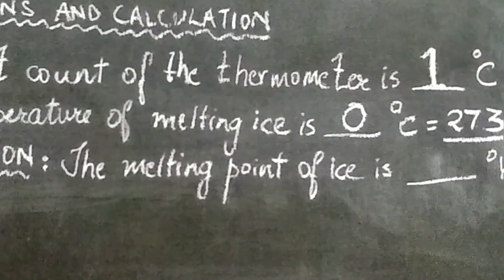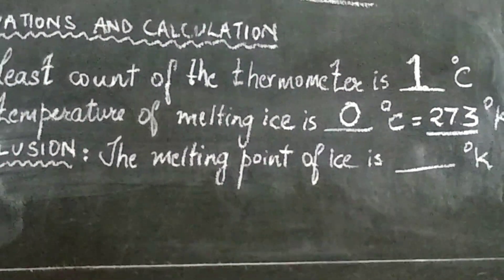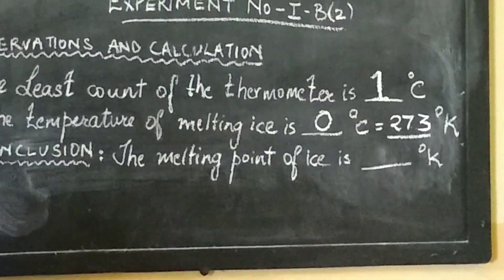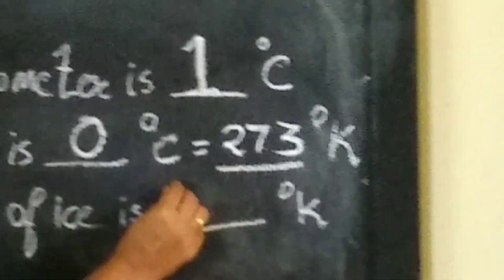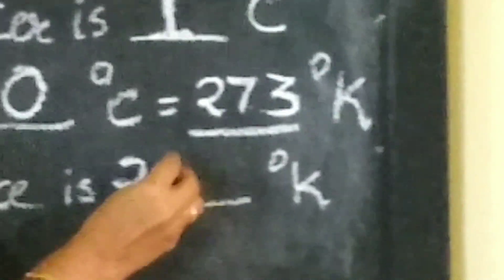Coming to the conclusion, the melting point of ice is 273 Kelvin.